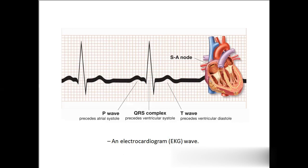A huge amount of electricity is needed to stimulate the ventricles, that's why the wave is bigger. The T wave is ventricular diastole — systole means contraction, diastole means relaxation. Atrial diastole occurs within the QRS complex, because it happens alongside ventricular systole. So P, QRS, and T wave — these three waves make up the ECG.